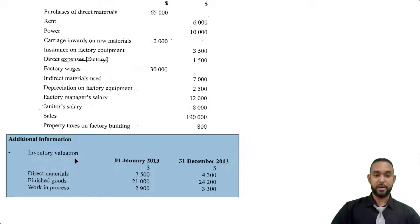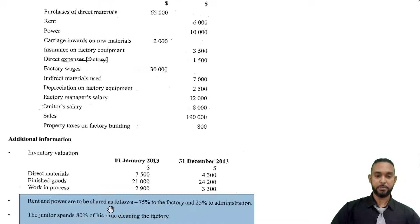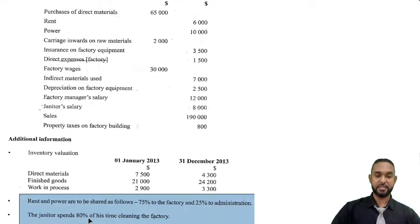The additional information covers inventory valuation. For manufacturing accounts, you have three sets of inventory: direct materials, finished goods, and work in process. One column shows 1 January 2013 — your opening stock balances — and the other shows 31 December 2013 — your closing stock balances. Rent and power are to be shared: 75% to factory and 25% to administration, so those figures will need to be multiplied by those percentages. The janitor spends 80% of his time cleaning the factory, which is how his costs are shared between the manufacturing account and the income statement.